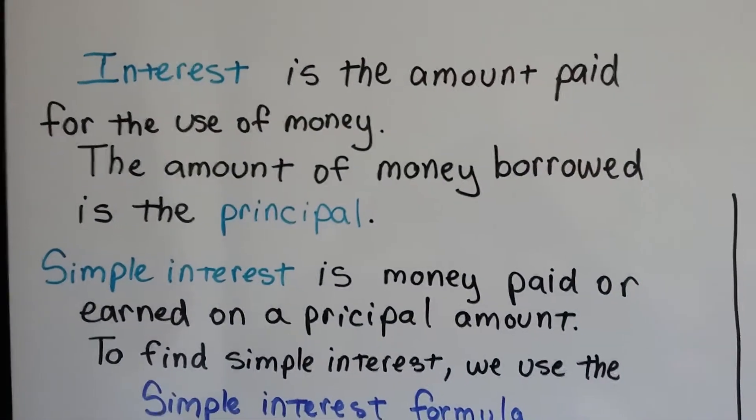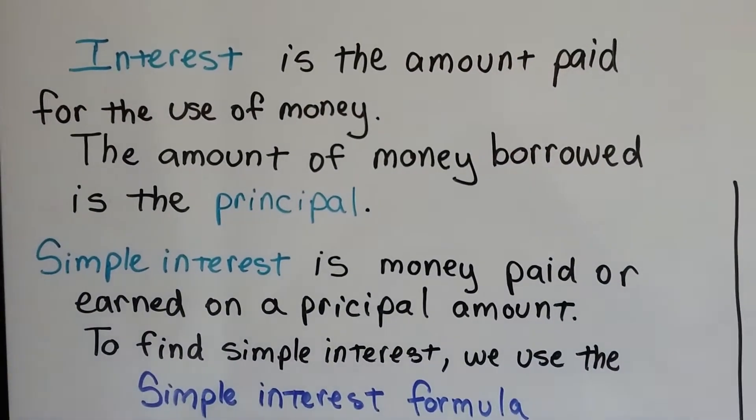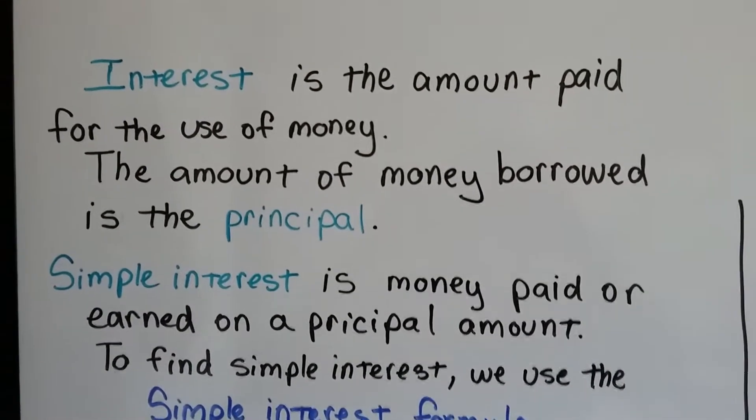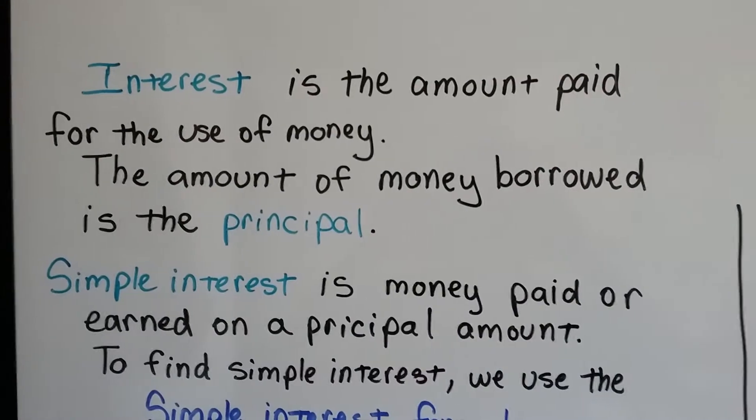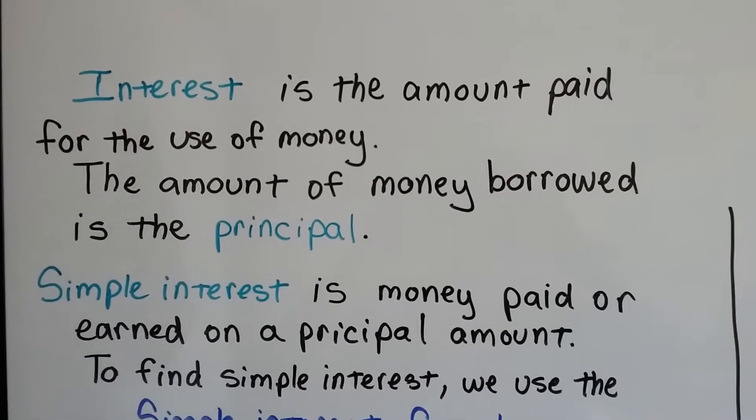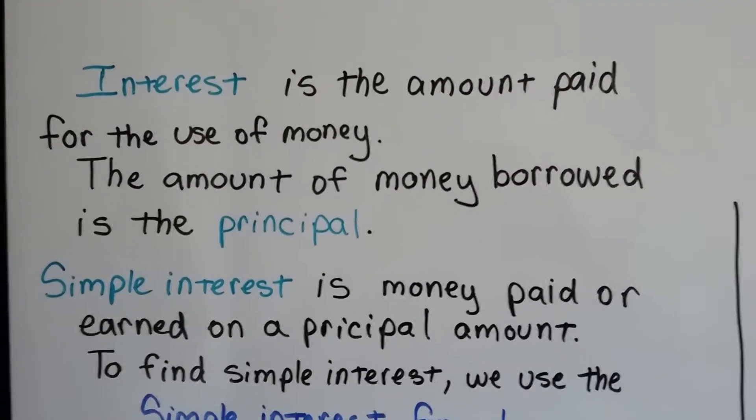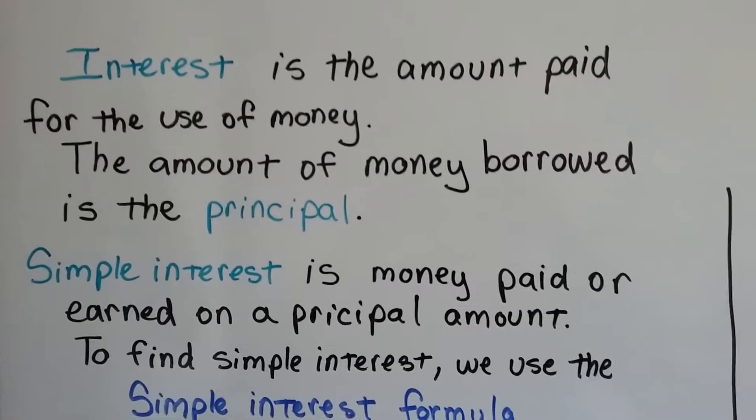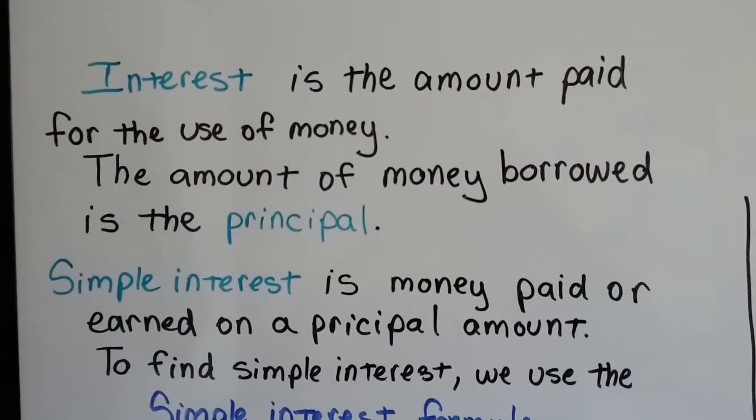Remember, interest is the amount paid for the use of money. The amount of money borrowed is the principal. So if you have an amount in the bank, the bank will pay you that interest for letting you have the money in the bank because they're going to use it. And then if you borrow money, then you need to pay them the interest for borrowing the money.